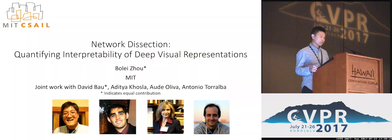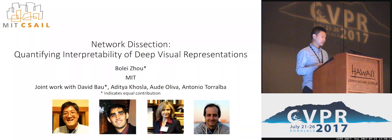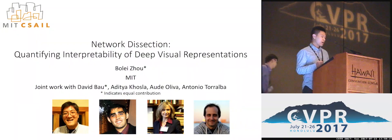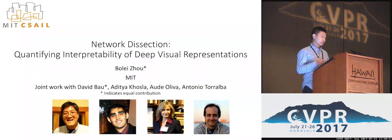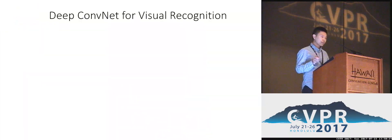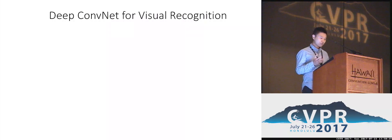This talk is not about proposing a fancy network like dense nets this morning. This work is more about conducting an empirical study on common properties for neural networks — specifically, network interpretability. Over the years, deep convolutional nets have been widely used in computer vision, especially for visual recognition.